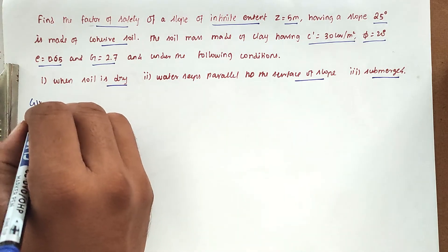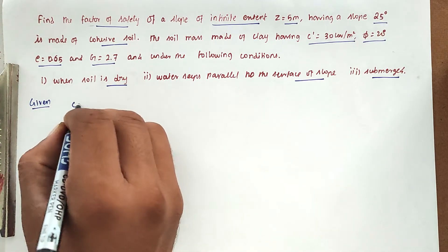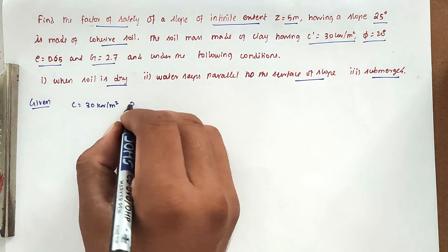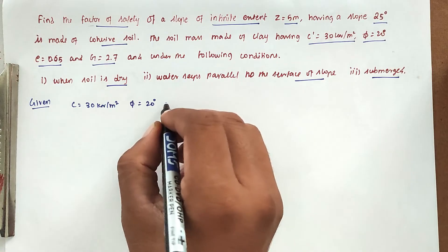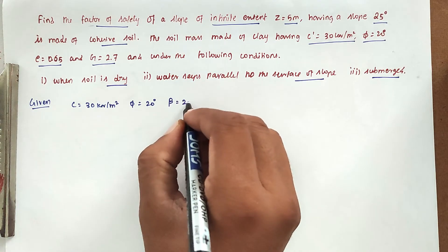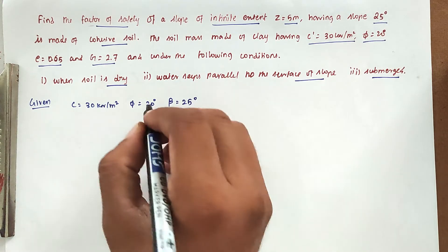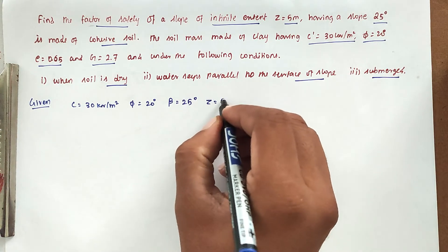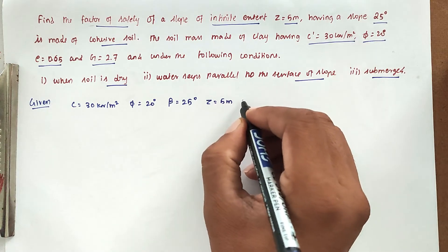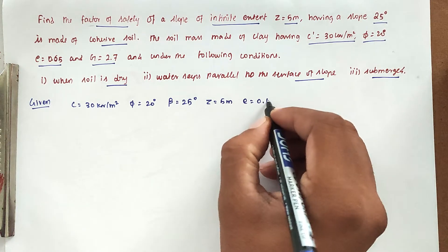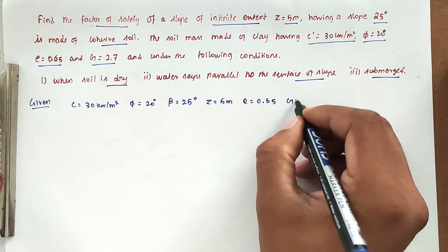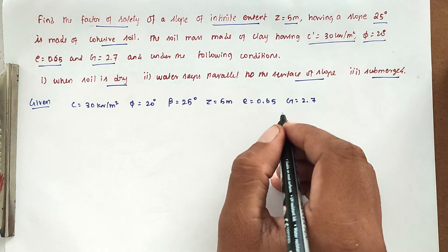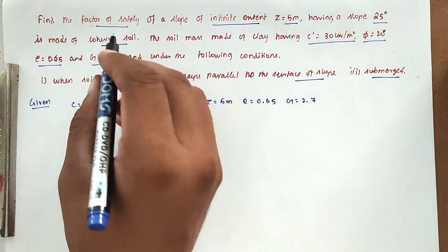Given values: C equal to 30 kilo Newton per meter square, angle of internal friction phi is 20 degree, slope beta equal to 25 degree, Z equal to 5 meter, void ratio E equal to 0.65, specific gravity G equal to 2.7. These are all the given values and we have to find out the factor of safety.